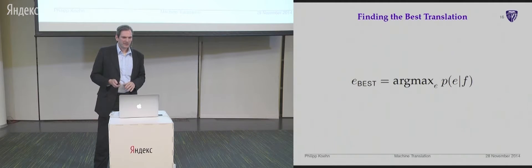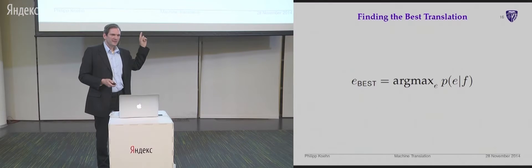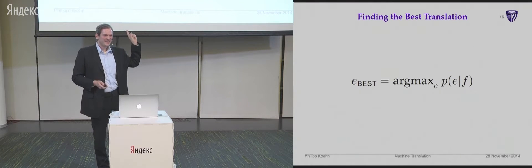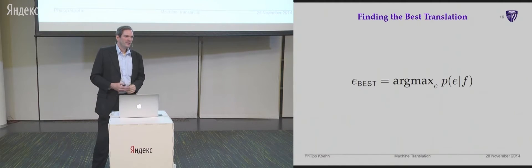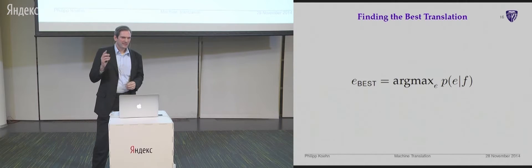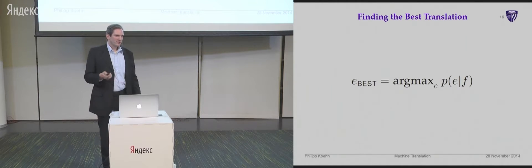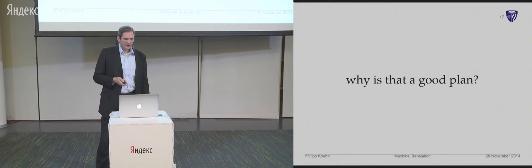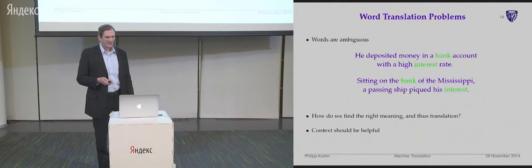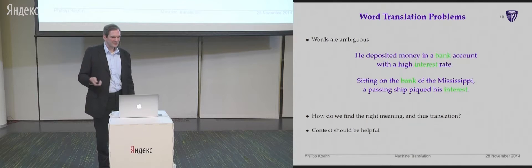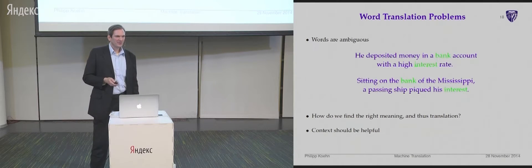These two models together allow you to come up with a decoding algorithm that, given an input string of words, produces an output string of words — translating from a foreign language to English. Here is my only formula in the talk. We want a probability distribution over English sentences given a foreign sentence, and we want to find the English sentence with the highest probability according to that distribution.